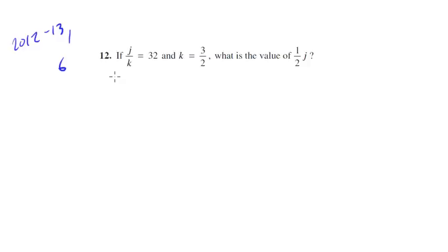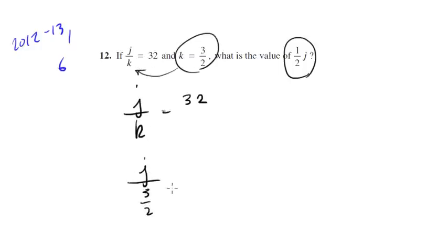If j over k equals 32 and k equals 3 halves, what is the value of 1 half j? Let's be careful there because we want to give them 1 half j, not j. So we're told j over k is 32, and then we're told k is 3 halves, so let's go ahead and substitute that in. So we're going to get j over 3 halves equals 32.